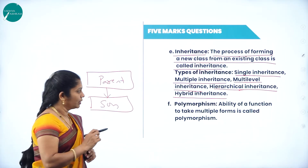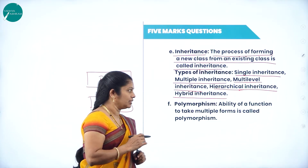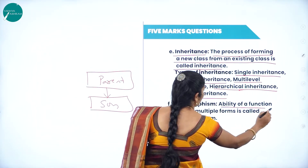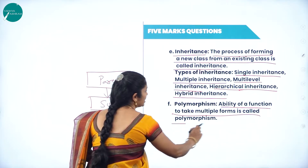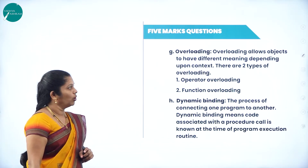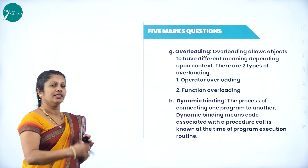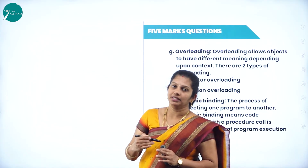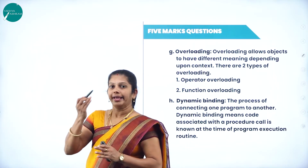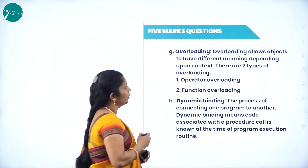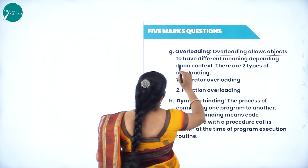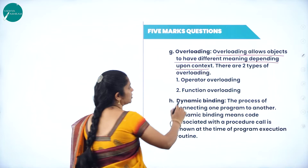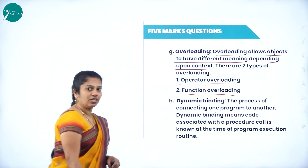The next feature is polymorphism — the ability to behave in more than one form. That is, the ability of a function to take multiple forms is known as polymorphism. The next feature is overloading. If you write any five features, that's enough from an examination point of view, since you may expect the question on features or characteristics of OOP for five marks. Overloading allows objects to have different meanings depending upon the context. There are two types: operator overloading and function overloading.